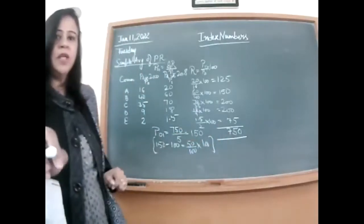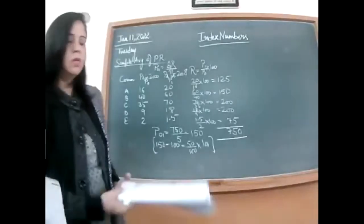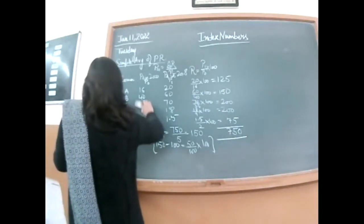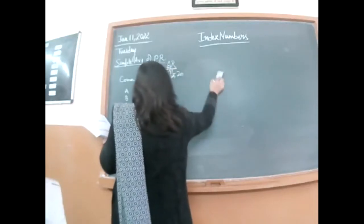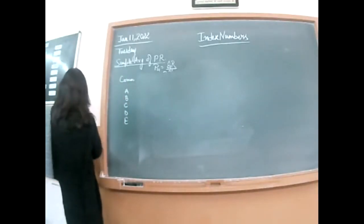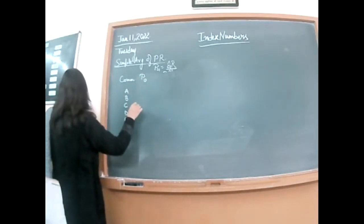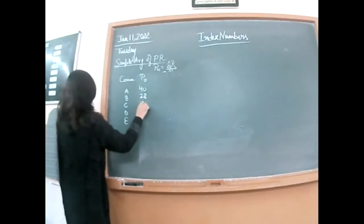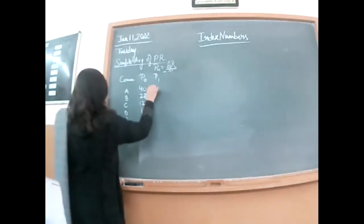Okay, so you have completed this question today. Anyone having any doubt? We'll be doing one more question. Construct index number using simple average of price relatives. You are given commodities, you are given the prices in current year as well as in base year. Note down the base year prices first, then you are given current year prices.